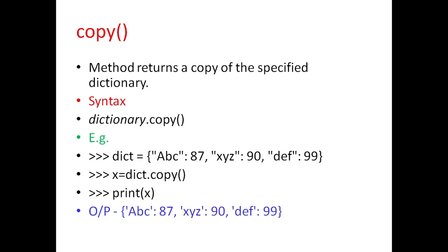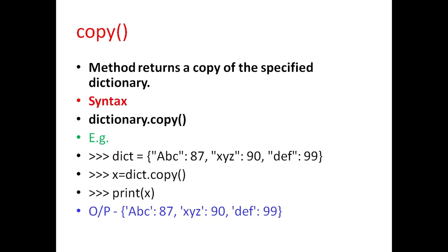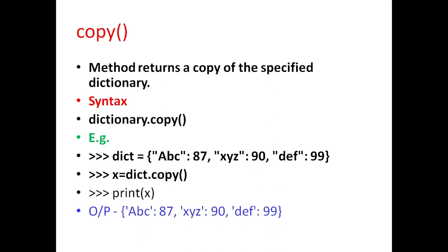Next is copy. This method returns a copy of the specified dictionary. The general syntax is dictionary.copy. For example, if dictionary dict is defined with these elements and if we give the command x equal to dict.copy, and when we print x it will give the same output as the dictionary, since the elements from the dictionary are copied into x.